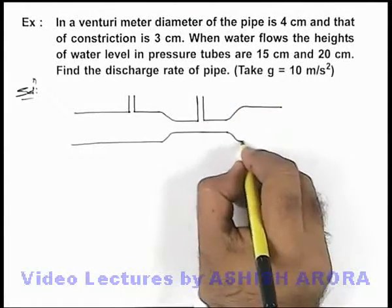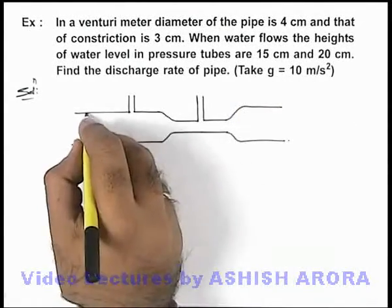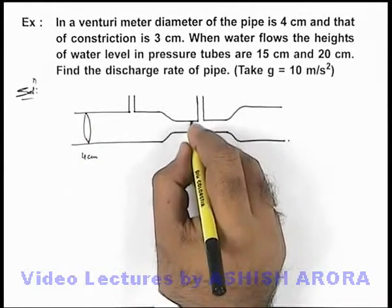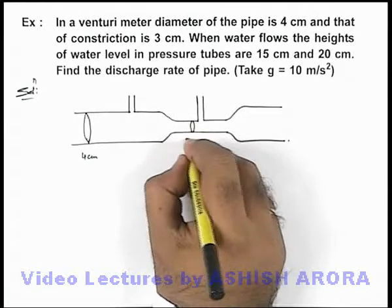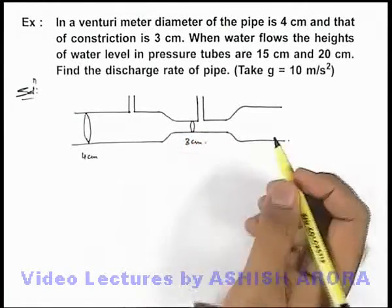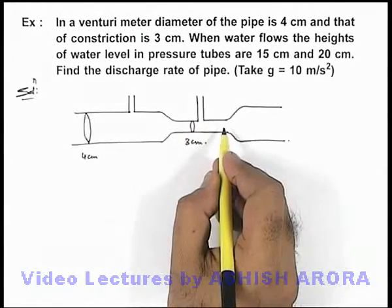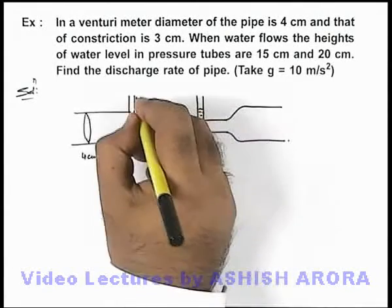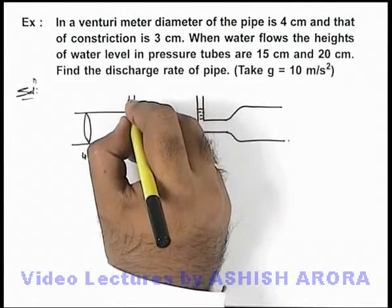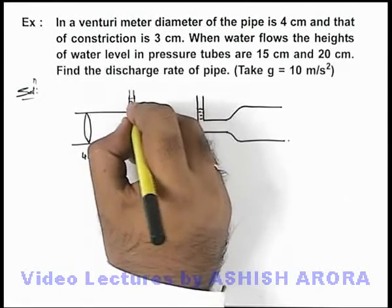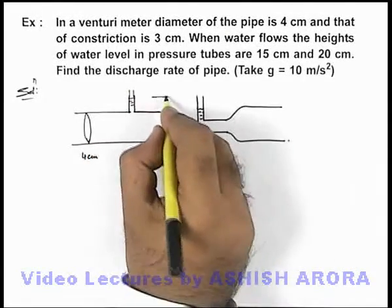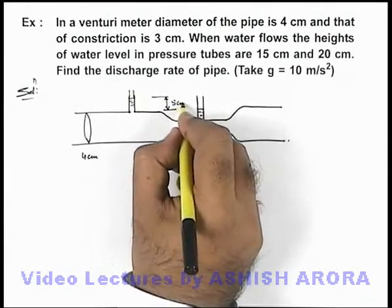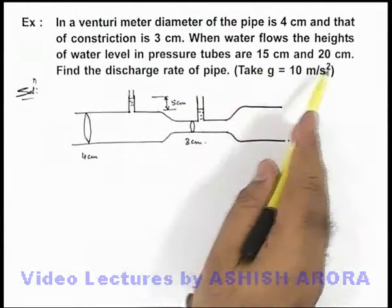In this situation, we are given that the diameter is 4 centimeter at the level of pipe and at the level of constriction it is 3 centimeter. So obviously the flow velocity here will increase and pressure will drop, so water level here will be less and the water level in this tube will be relatively more. And the difference in the 2 levels here we can see it is given to be 5 centimeter because here it is 15 and 20 centimeter.